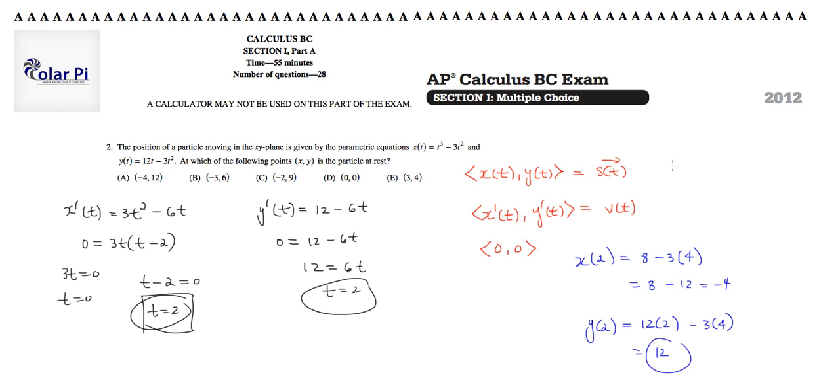And so then the point has to be negative 4 comma, I didn't write that very well, so the point has to be negative 4 comma 12. Okay, so there. Answer choice A, and we circle them in red, so let me do that. Okay, take care.